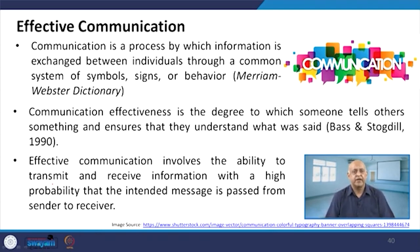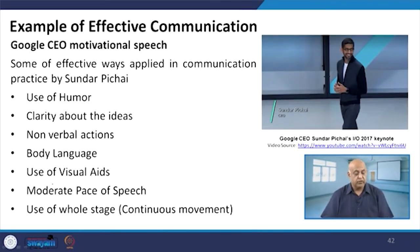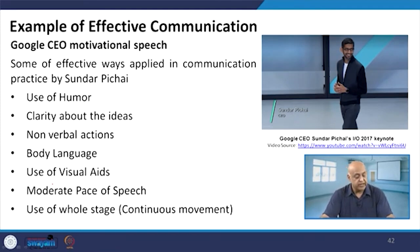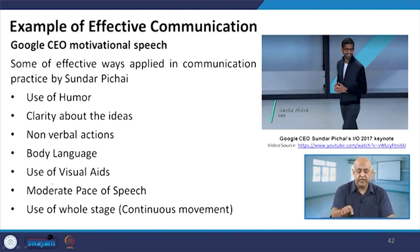We will see the behavioral aspects of effective communication. It involves the ability to transmit and receive information, with a high probability that the intended message goes from sender to receiver. When we talk about examples of effective communication, we take the Google CEO's motivational speech — Sundar Pichai's 2017 keynote address. The salient features include use of humor, clarity of ideas, nonverbal actions affecting followers, body language, use of visual aids, moderate pace of speech, and use of the whole stage with continuous movement — giving the message of how active and energetic the leader is.